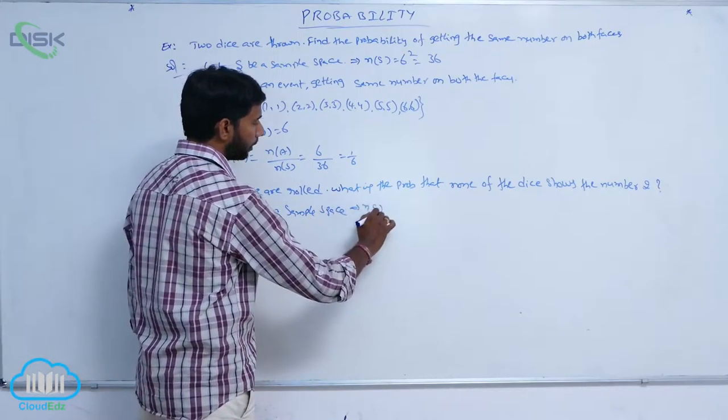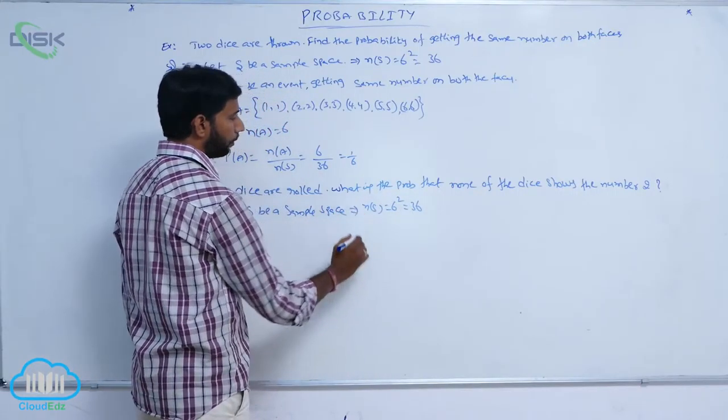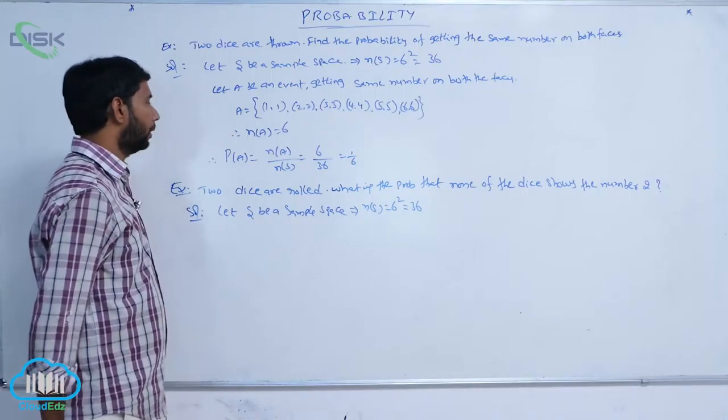N of S is equal to 6 square, that is equal to 36.